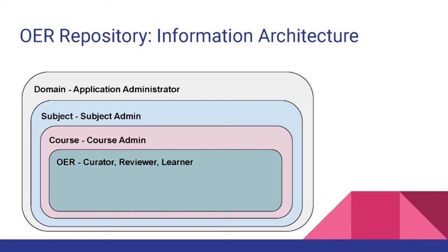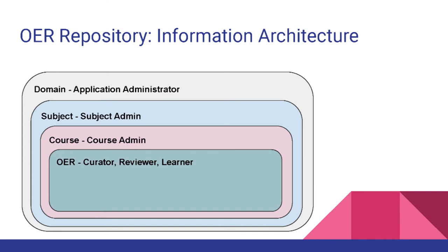This diagram also represents the authority of the users. Domain will be managed by application administrator, subjects by subject admin, course by course admin. When uploading OERs in the OER repository, it will pass through some workflow. In this workflow, there will be different users — like a curator who will submit OER, meaning upload a file along with metadata. After submitting, it will pass to a reviewer. The reviewer will review the metadata, and once approved, it will be publicly available.